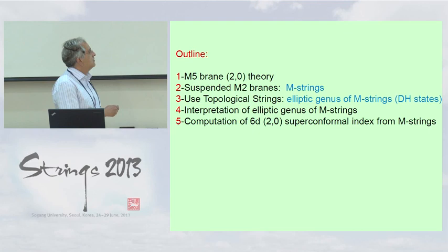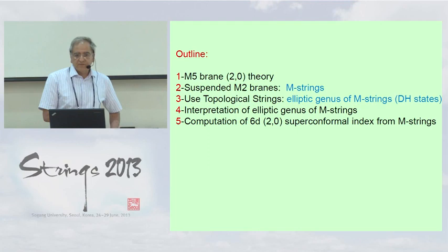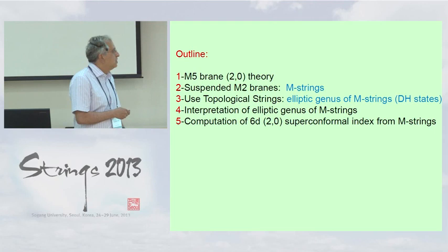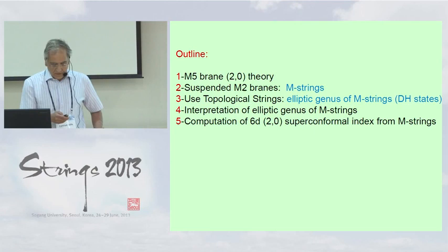The main result of the talk is this computation, which one can think of as encapsulating the Davalk-Harvey states of the M-strings. Then the question is: once we have computed this, what is the interpretation of this elliptic genus? I'll offer some thoughts about what M-strings are after all, and I will explain the relation between the computation of the superconformal index of the two-comma-zero theory and the elliptic genus of M-strings.